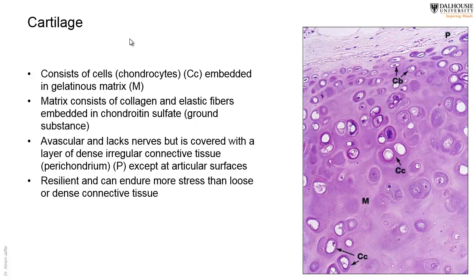Let's start with cartilage. Cartilage consists of chondrocytes embedded in a gelatinous matrix. Like all connective tissue, it has cells and matrix, where the matrix consists of ground substance and fibers. The cells are not tightly packed but are embedded in the matrix. The cells are either blasts or cytes: chondroblasts are the cells that lay down the matrix, and then they become imprisoned inside the matrix in spaces called lacunae, forming the chondrocytes.